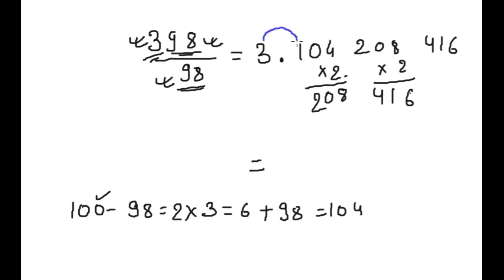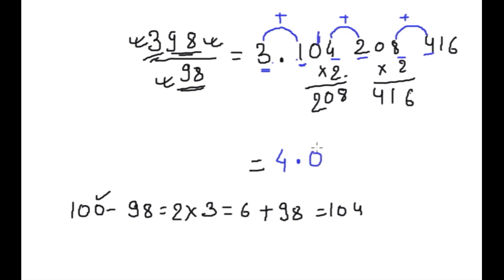Now, again this is 3-digit, so we do addition of last digit and first digit. 3 and 1 gives 4. Then 0 and 0 gives 0. Then 4 and 2 gives 6. Then 0, and 8 and 4 gives 12. So we write 12. You can see none of the questions is taking more than 5 seconds.